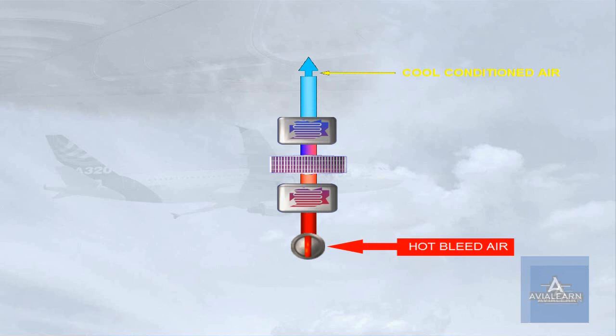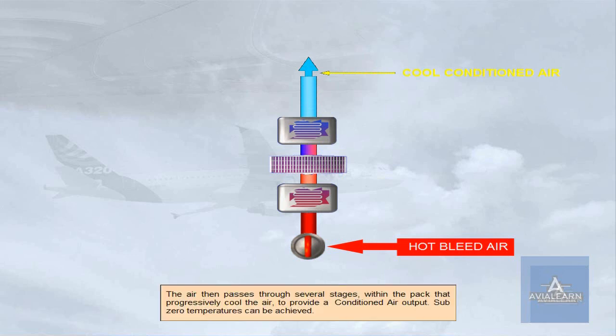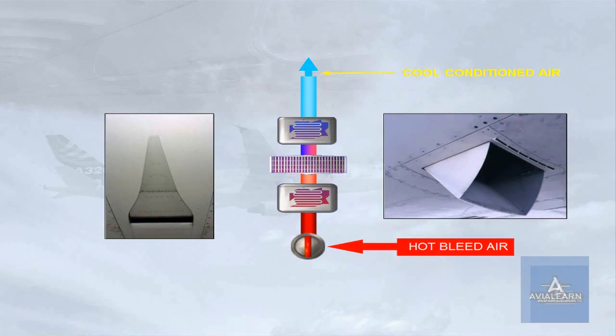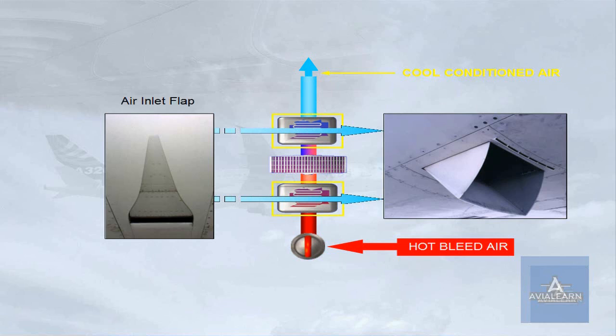Sub-zero temperatures can be achieved. Two of the stages are heat exchangers. They cool the hot bleed air using the flowing ambient air. This flow of air enters via the ram air inlet flap and exits via the ram air outlet flap.